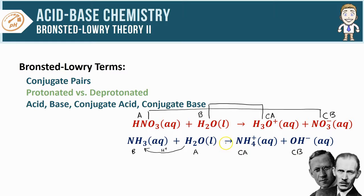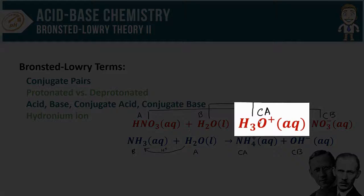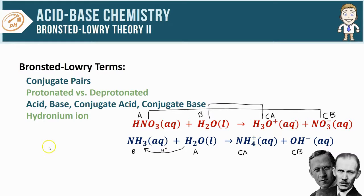Hydronium ion is the name given to this very important H3O plus particle. Remember that's the particle produced by any acid in water that's actually causing the solution to be acidic and giving it a lower pH.